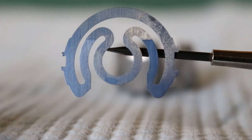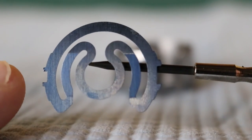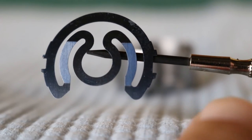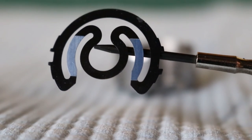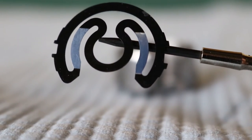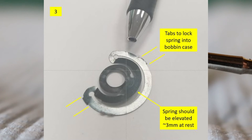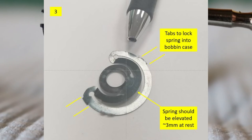You will note that the bobbin spring has tabs on either side of it, pointing out with my finger on one side and then the other. I'm going to put up a picture to better show them. These tabs go into slots in the bobbin case to anchor the spring to the bobbin case so it won't spin.